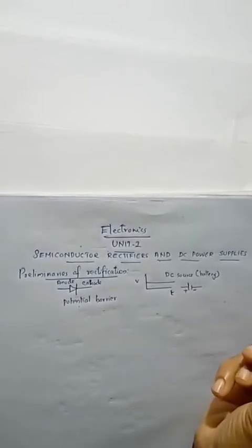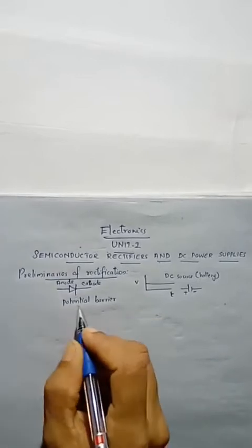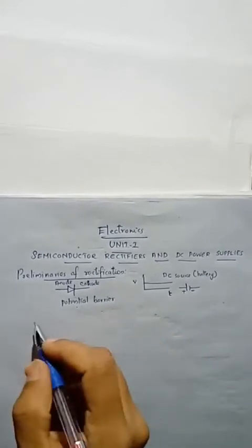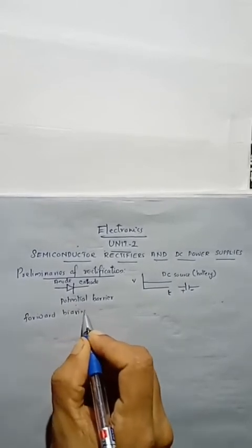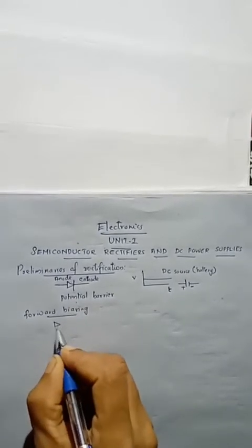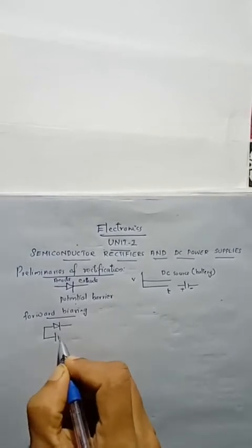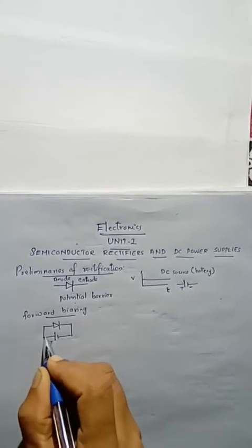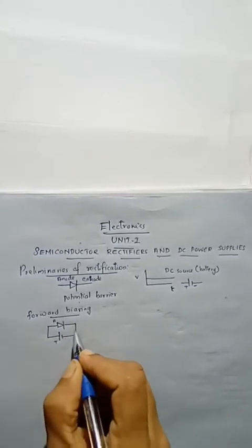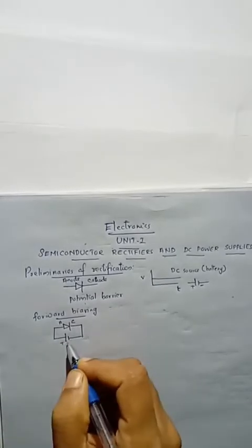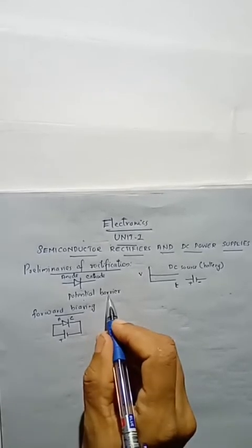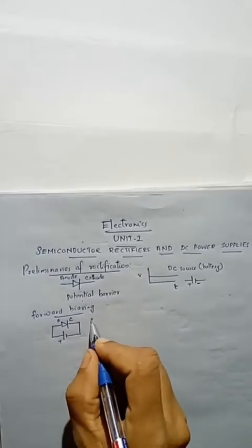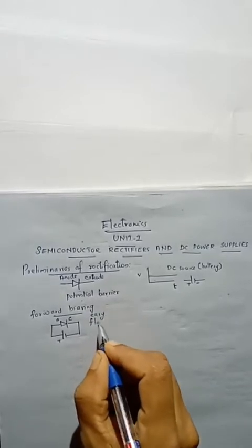The symbol for a battery has a positive terminal and a negative terminal. We can connect this battery to overcome the potential barrier, and we can connect it in two different manners. One is forward biasing. In forward biasing, the positive terminal of the battery is connected to the anode part and the negative of the battery is connected to the cathode part. In this case, the height of the potential barrier decreases and there is an easy flow of current through the diode.